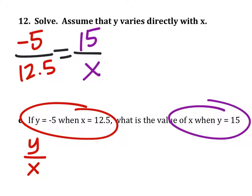So using cross multiplication, let's go ahead and cross these two firsts, which would give us negative 5 times an x. And this should equals, we'll do 15 times 12.5, 187.5.